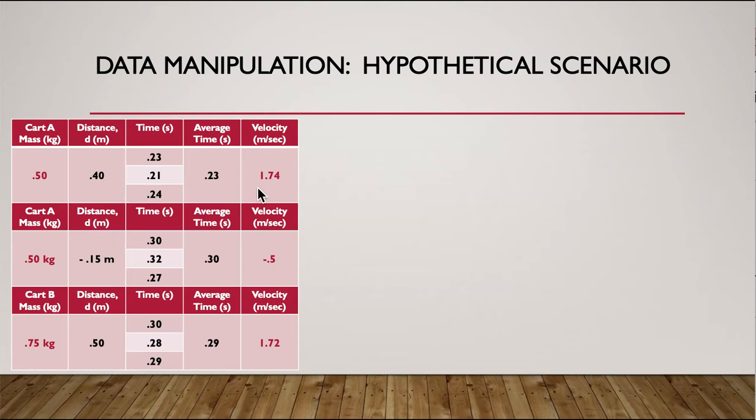The important numbers are highlighted. So when it comes to finding momentum, we need to know the velocity and we need to know the mass, which is why I highlighted those. To find this velocity number, it's really straightforward. I took the times, I averaged them, and then I just did distance divided by time to get velocity. Super easy.